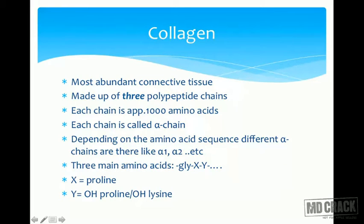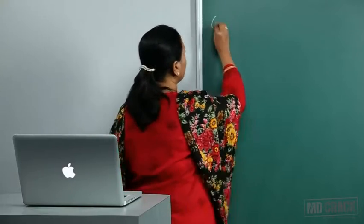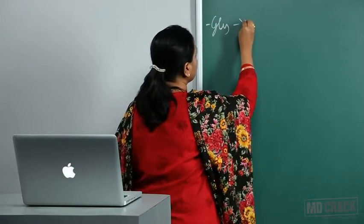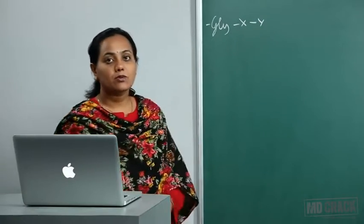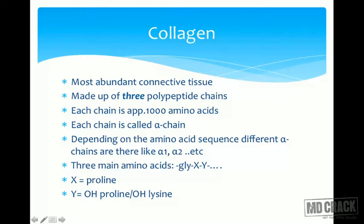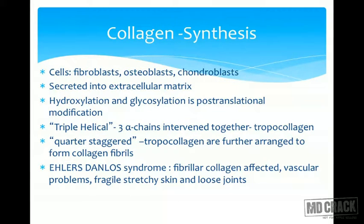Each chain is called an alpha chain. Depending on the amino acid sequence difference, there are different types of alpha chains like alpha-1, alpha-2, etc. Collagen is made up of three main amino acids and is always represented by the formula: glycine-X-Y, where X can be proline and Y can be hydroxyproline or hydroxylysine. We'll go further with the synthesis of collagen.